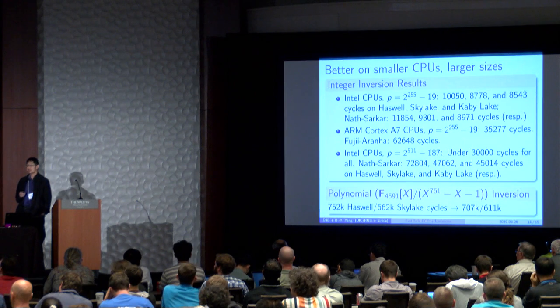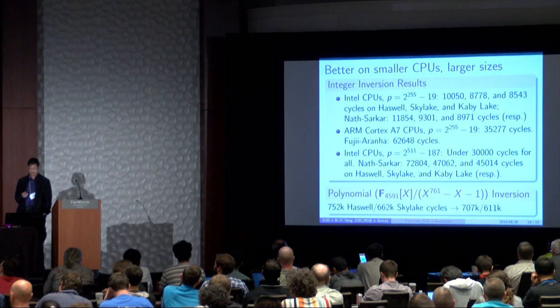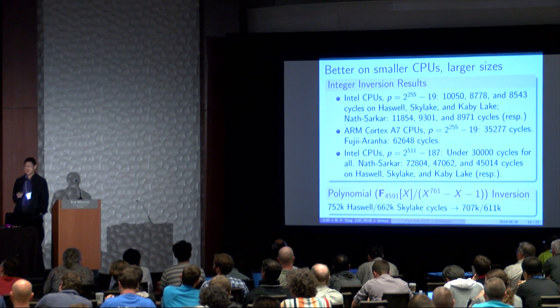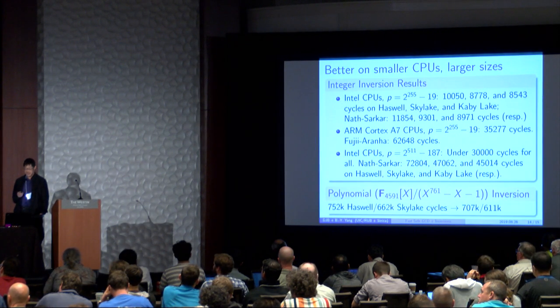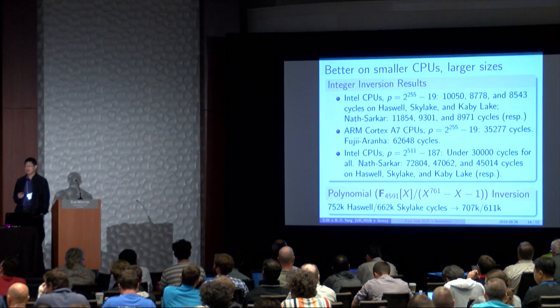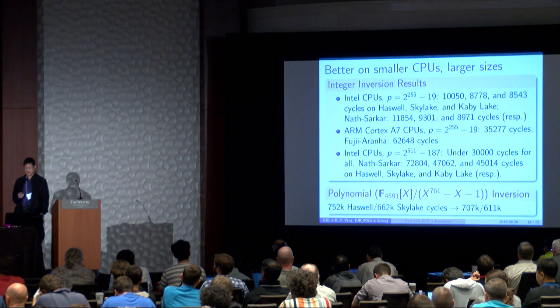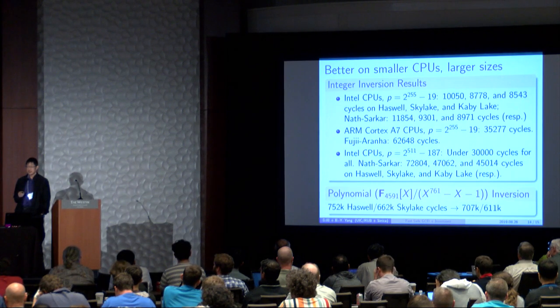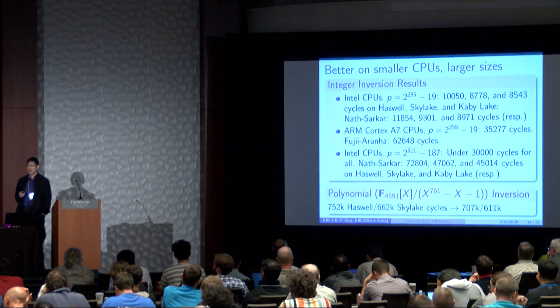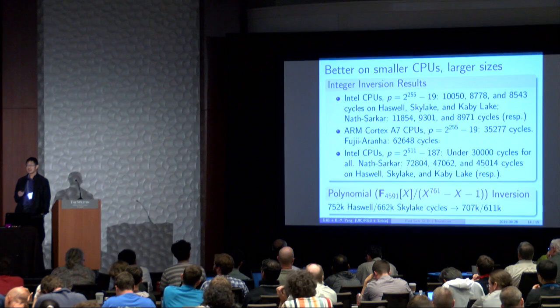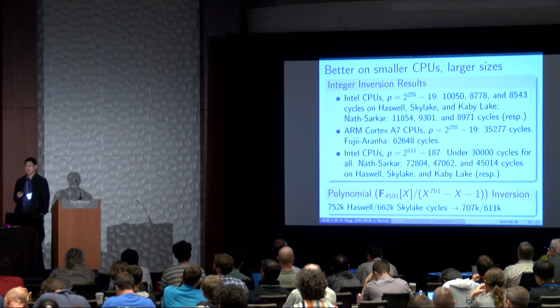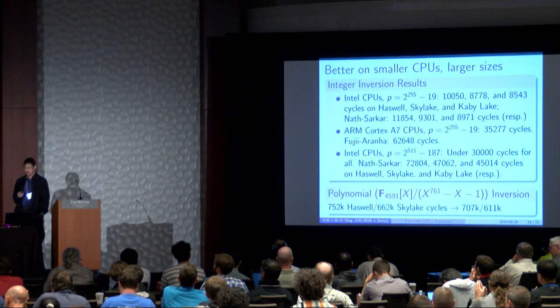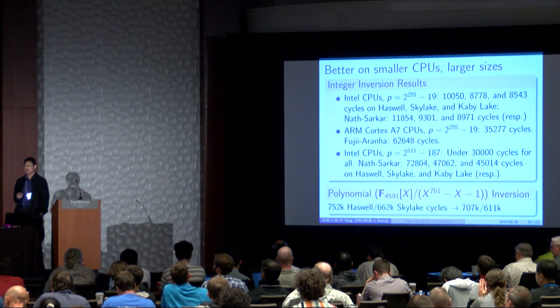However if we look at smaller CPUs that don't have as big a multiplier, for example the ARM Cortex-A7 which is a very common microprocessor, and we take the same 255.19 prime, this takes about 35,000 A7 cycles and compared to Fujisaki and Okamoto this is about 40% faster. And if we treat a 511 bit prime like the one that's used in C-SIDH, however this one is a pseudo-Mersenne prime so that should be better for Fermat's little theorem, and we can see that this is anywhere between 50 to 120% faster.